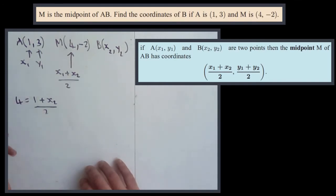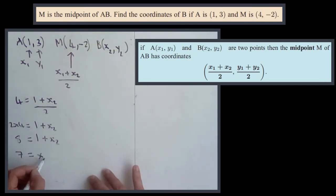So that would be 2×4 = 1+x2. 2 times 4 is 8. 8 = 1+x2. Then we just need to subtract 1. So 7 = x2.